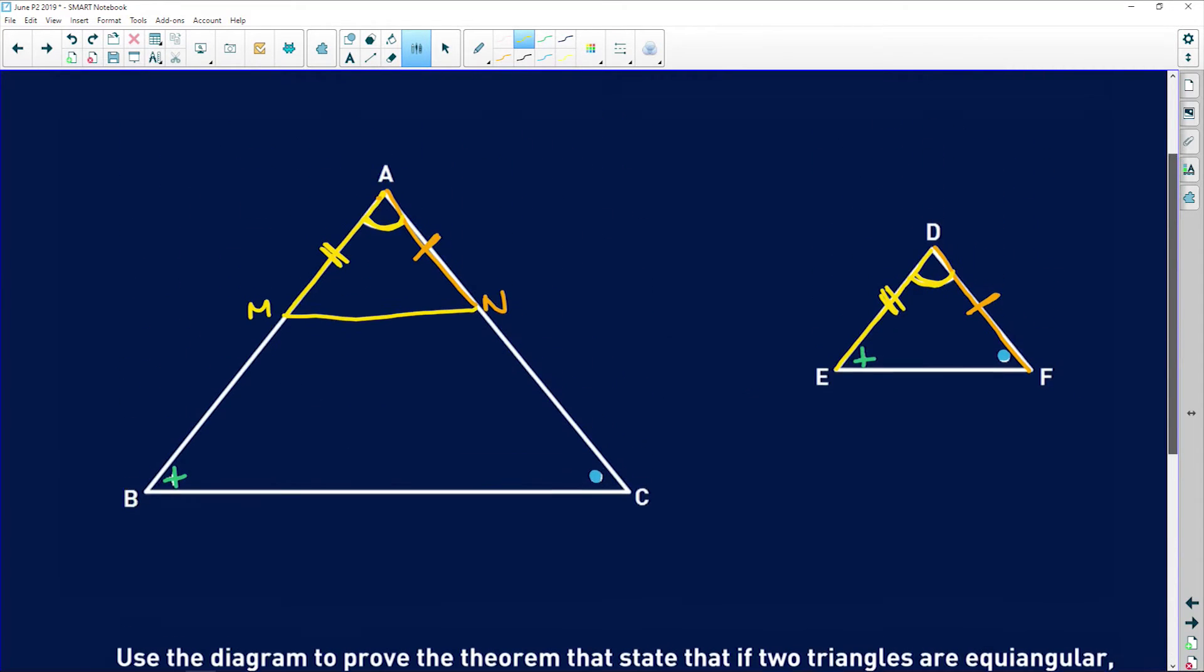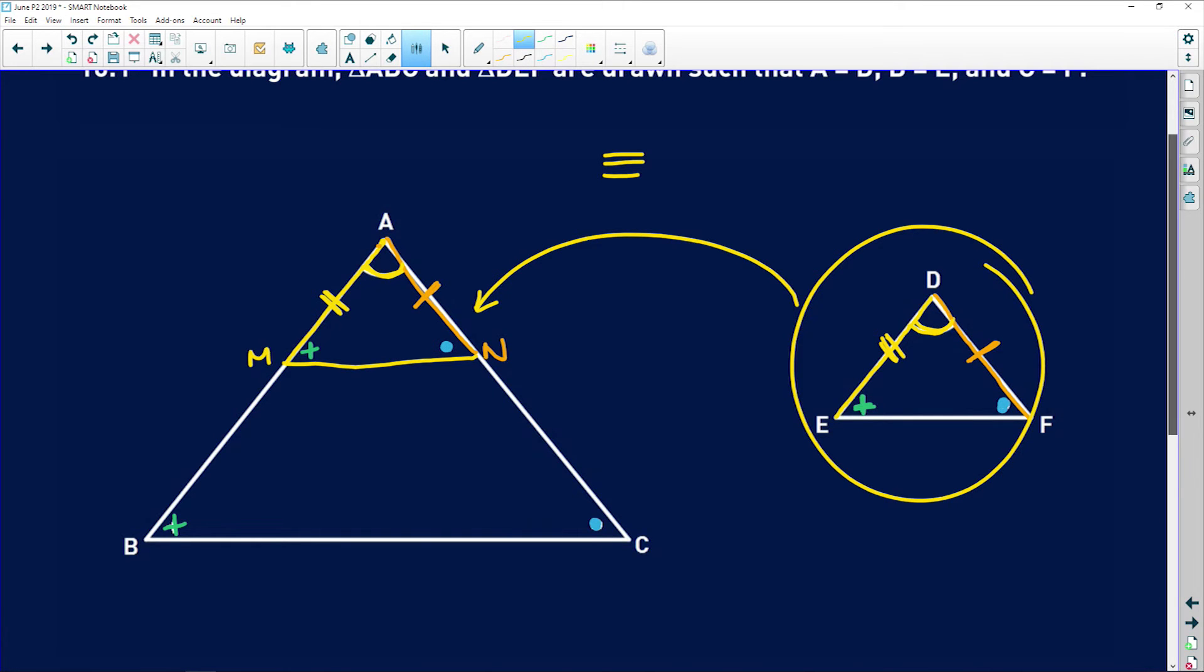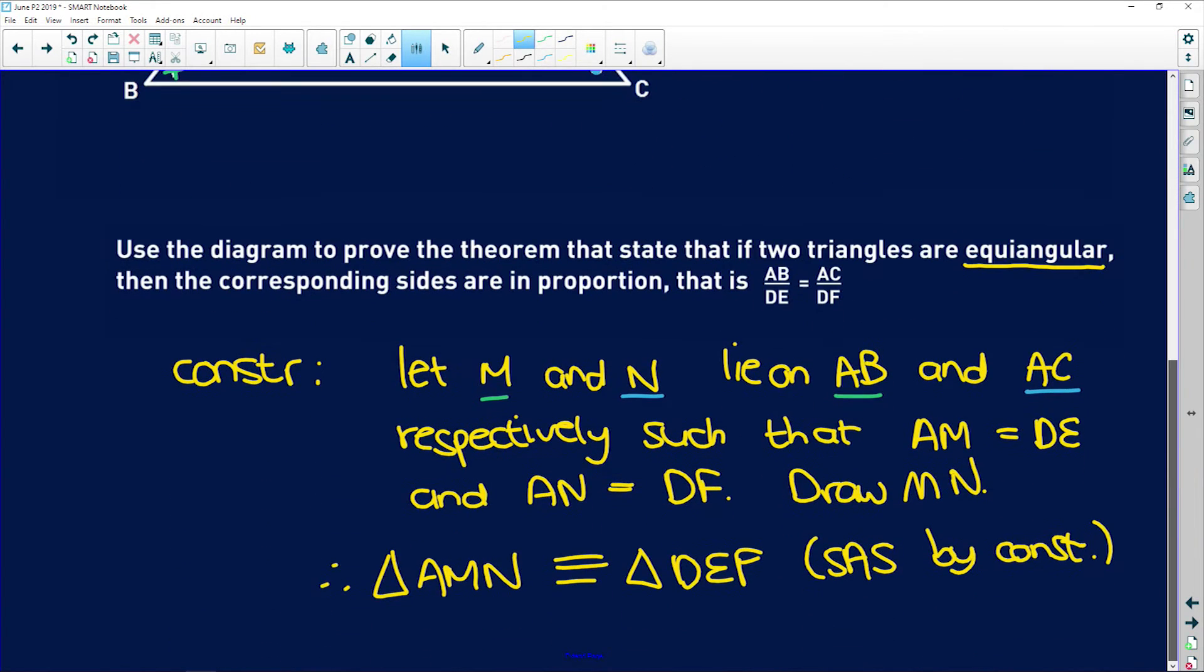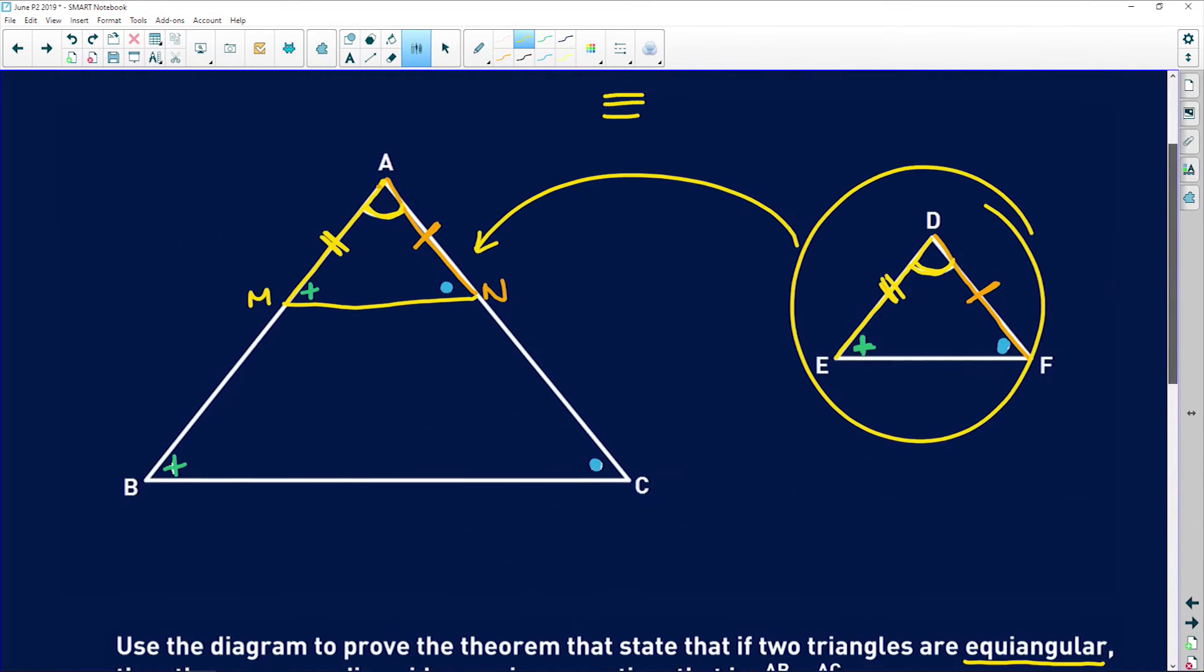So now that we've established, we've basically taken this whole triangle and just stuck it into that triangle. And now because these triangles are congruent, we know that this angle E is equal to that angle AMN. And this angle F is equal to that angle AFM. Therefore, and then again, because these angles